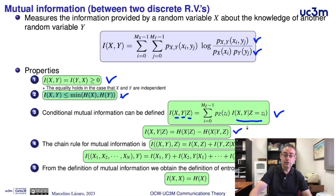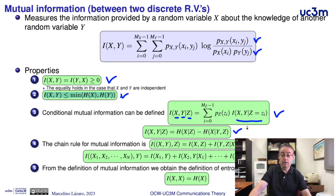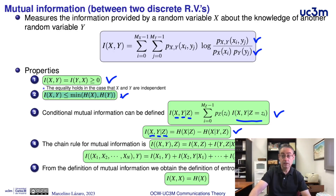The same conditional mutual information can be obtained by a relationship with the conditional entropies. The conditional mutual information between x and y given z is equal to the conditional entropy of x given z, minus the conditional entropy of x given both y and z.